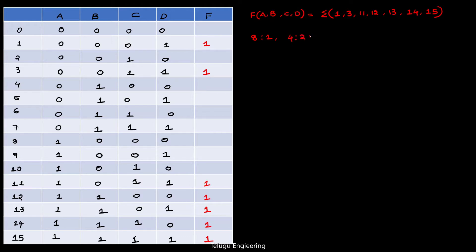So, 4 is to 1 multiplexer. We know that 2 to the power 2 is equal to 4, so it is having 4 inputs and 2 select lines.